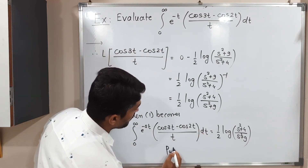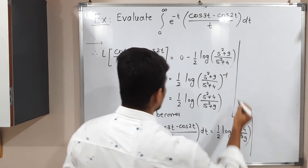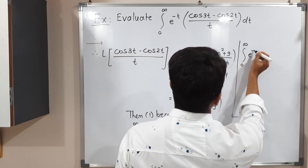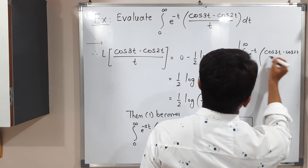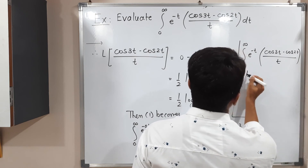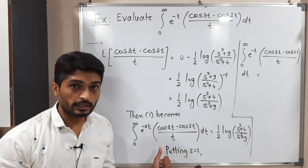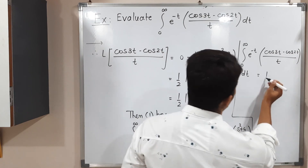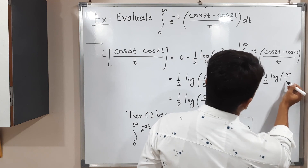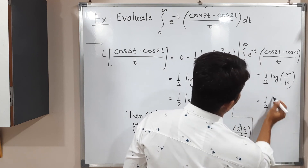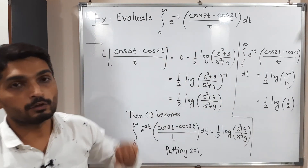To obtain the given integral we put s equal to 1. So the integral from 0 to infinity of e^(−t) times (cos 3t minus cos 2t)/t dt equals (1/2) log[(1+4)/(1+9)] = (1/2) log(5/10) = (1/2) log(1/2). This is the required answer — the value of the given integral has been calculated.